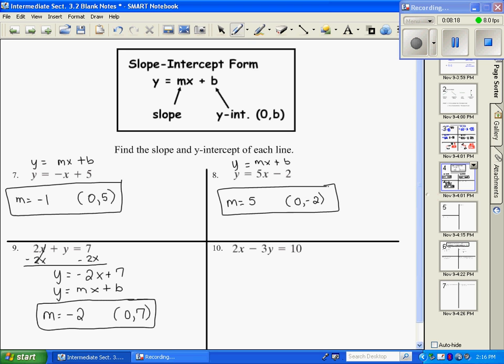And then we have number 10. We want to solve for y. So we're going to move x to the other side. Negative 3y equals negative 2x plus 10. Then divide everything by negative 3. And y equals 2 thirds x minus 10 thirds.